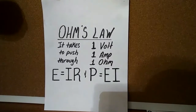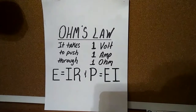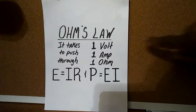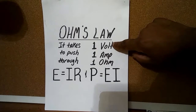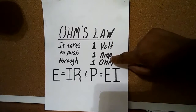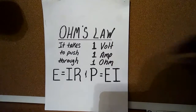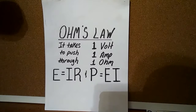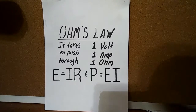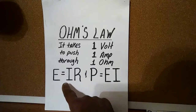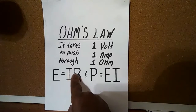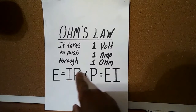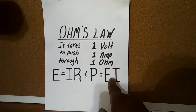Let me tell you a little about Ohm's Law. Ohm's Law states that it takes one volt to push one amp through one ohm. Now there's two main Ohm's Law formulas and the other ten Ohm's Law formulas are derived from those two formulas. Those two formulas are seen here: E equals I times R, and P equals E times I.